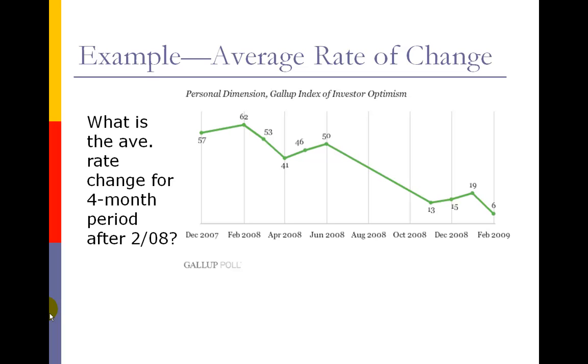So what I need to do is find the data point at February 2008 and then go four months, and that'll take me to June 2008. I'm really looking for the slope of this secant line between these two data points.